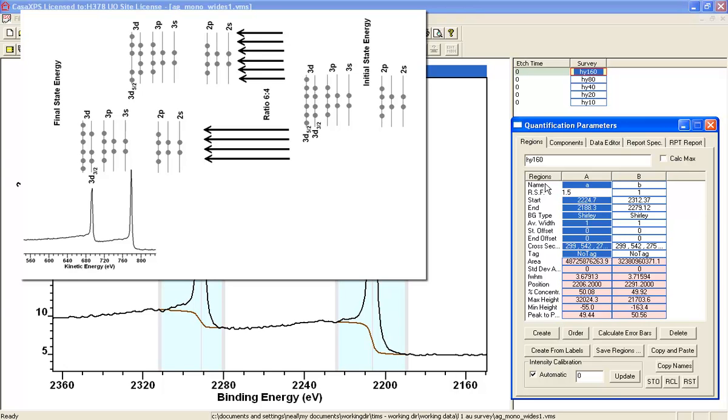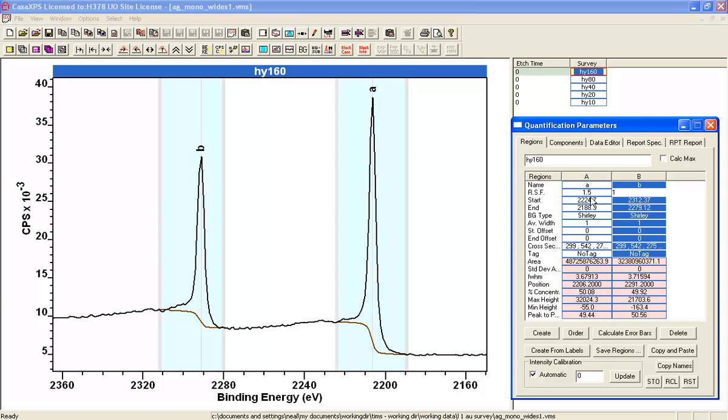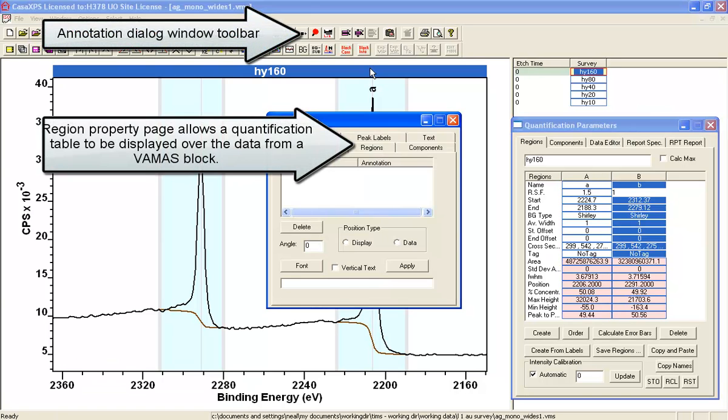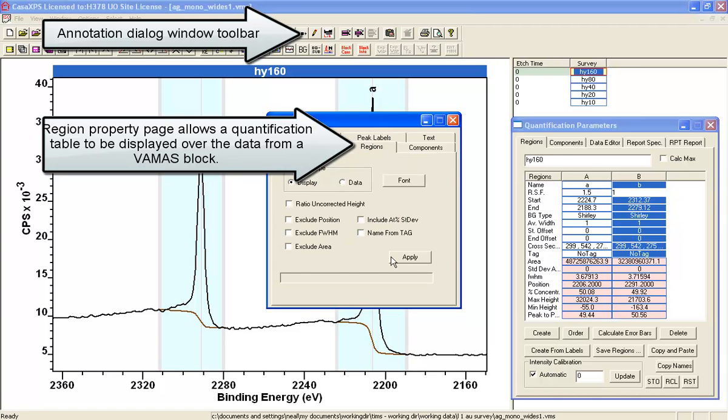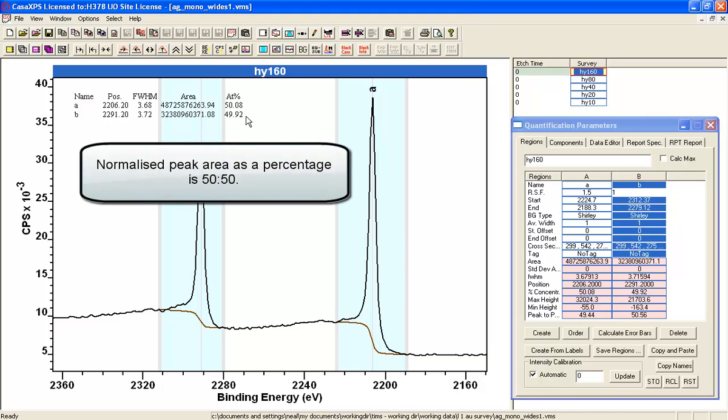And the ratio of these peaks should be 6 to 4 in favor of A. And that's exactly what, if I scale the intensities by a relative sensitivity relative to B of 1.5, then the percent concentration, which I can also see here, if I put up a quantification table over the data, you can see that when I scale according to the physical processes that I understand associated with these peaks, I do indeed get the same amount.